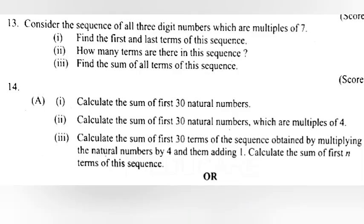13. Consider the sequence of all three digit numbers which are multiples of 7. 1. Find the first and last terms of the sequence. 2. How many terms are there in the sequence? 3. Find the sum of all terms of the sequence.